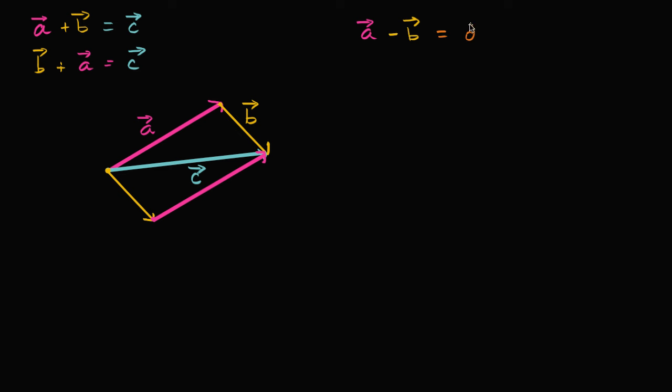So once again, I could start with vector A. And here order matters. So vector A looks something like this. This is hand drawn, so it's not gonna be completely perfect. So vector A, just like that.